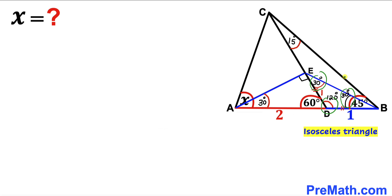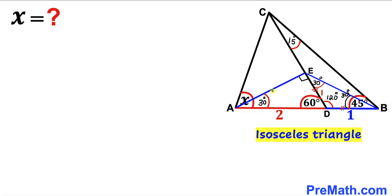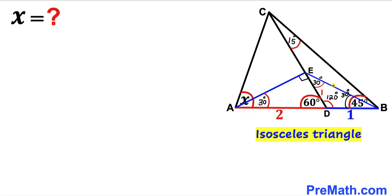Now focusing on triangle AEB, we can see that one angle is 30 degrees and another is 30 degrees as well. Therefore triangle AEB is an isosceles triangle, and we conclude that side EB equals side AE.